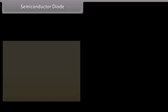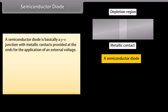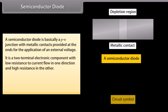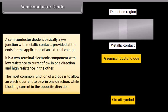A semiconductor diode is basically a P-N junction with metallic contacts provided at the ends for the application of an external voltage. It is a two-terminal device. The arrowhead corresponds to the P-type terminal and points in the direction of easy current flow. It is a two-terminal electronic component with low resistance to current flow in one direction and high resistance in the other. The most common function of a diode is to allow electric current to pass in one direction while blocking current in the opposite direction.